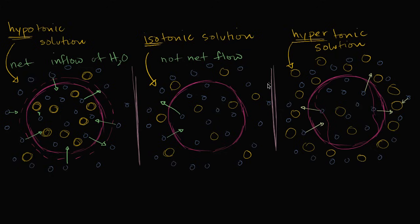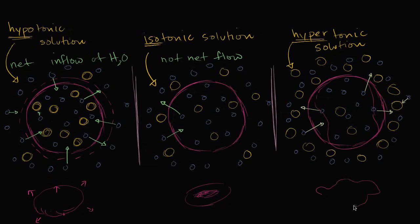You can actually see this in actual living systems. If you were to put a red blood cell into a hypotonic solution, the water's going to rush into it and it's going to expand — it's going to look like an overinflated red blood cell. In an isotonic solution, it's going to look the way we're used to seeing a red blood cell, with that little divot in the middle area. And then in the hypertonic solution, the water's going to escape the red blood cell and you would actually see it kind of shrivel up, because of the net outflow of water molecules.